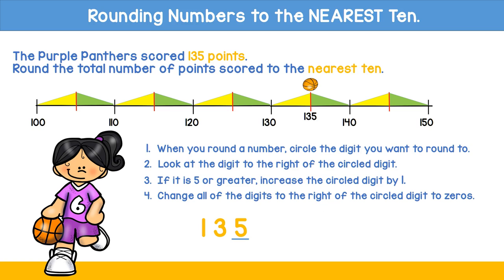Now let's try the step-by-step method. Look at the digit you want to round to and circle that. Here it's the three — we're going to circle the three in the tens place. To the right of the circled digit is a five. If it is five or greater, you increase the circled digit by one and change all of the digits to the right of the circled digit to zeros. 135 rounds to 140.